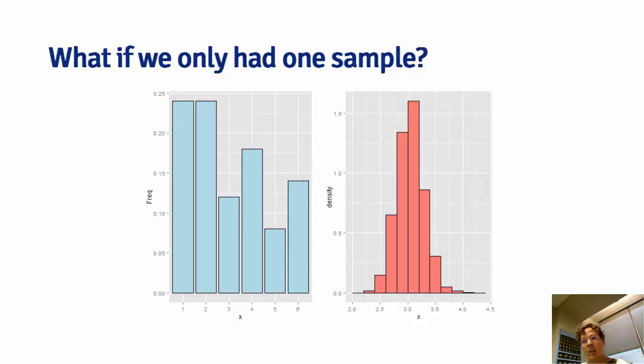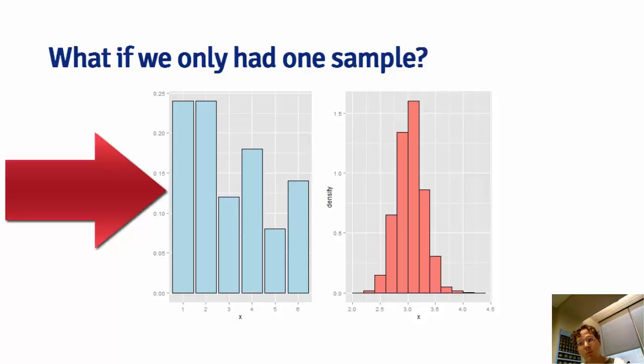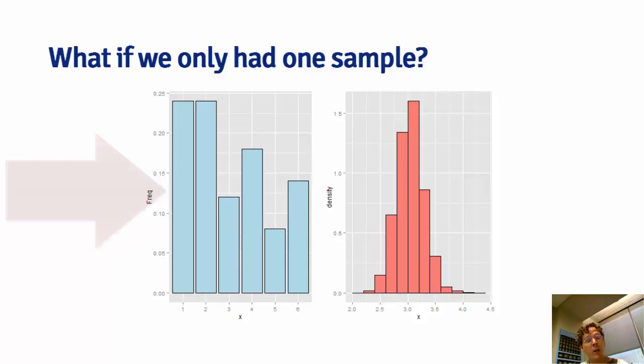So here on the left-hand side, I'm showing you the histogram of the various occurrences, 1, 2, 3, 4, 5, 6, for one sample realization that we drew from this population.